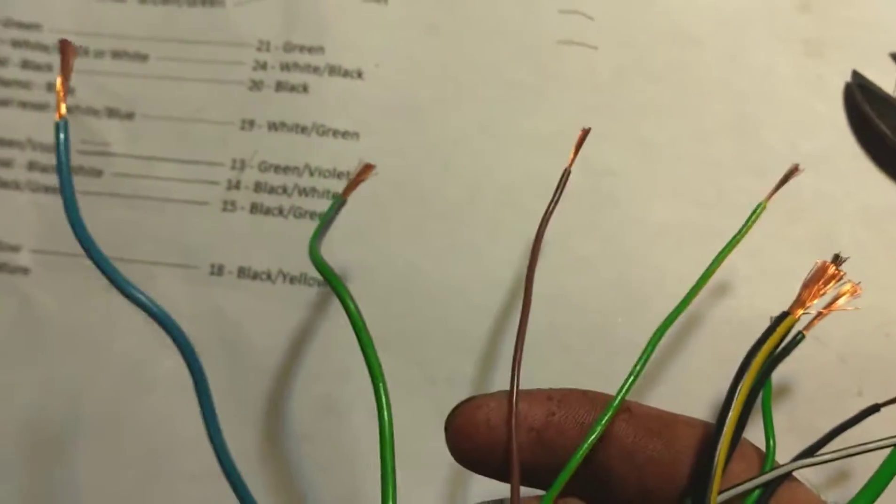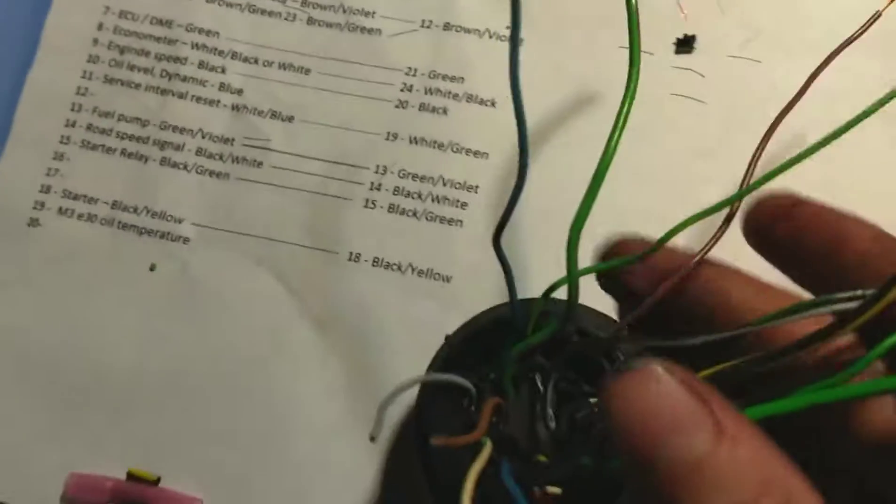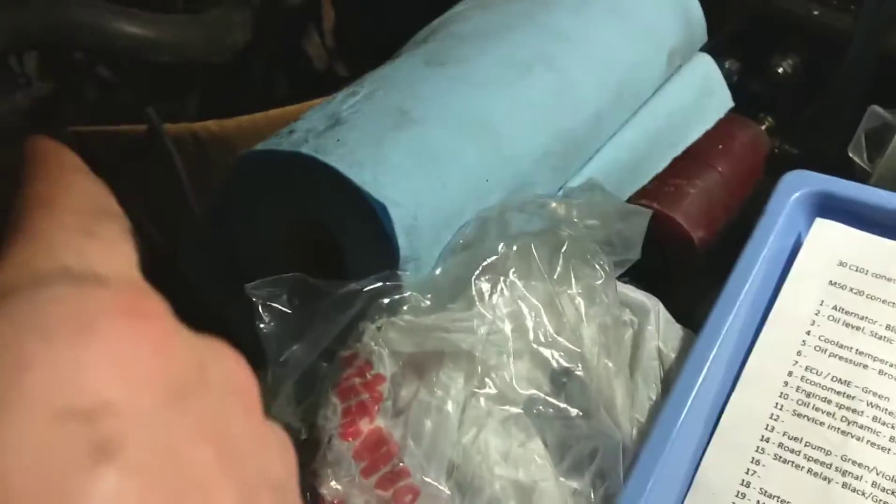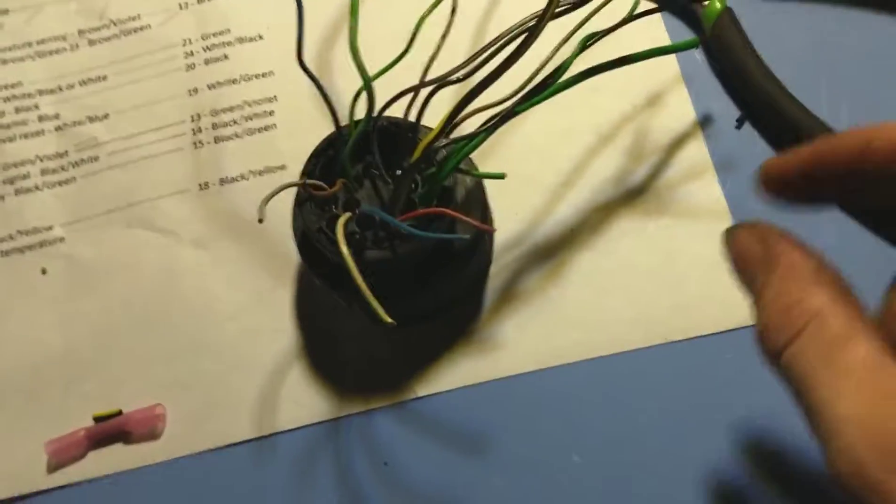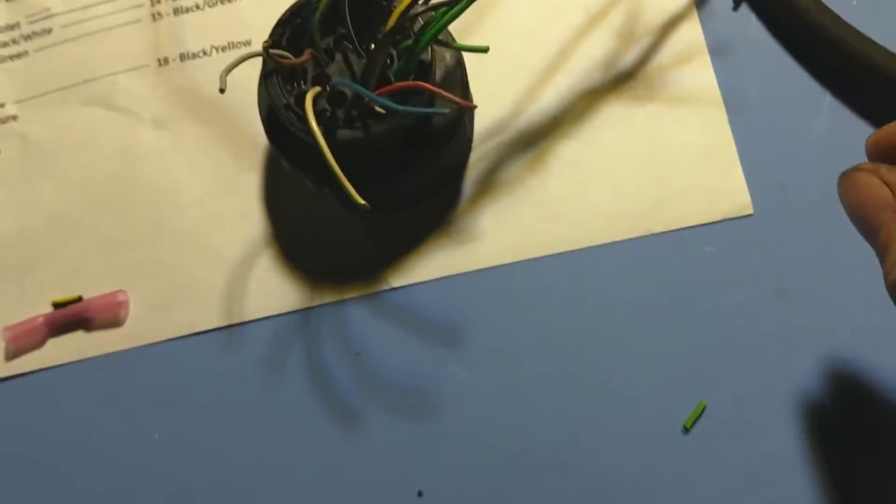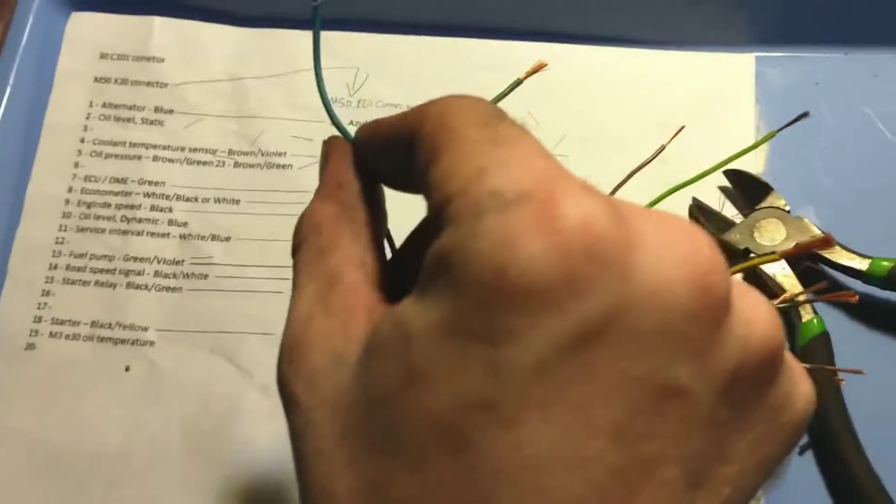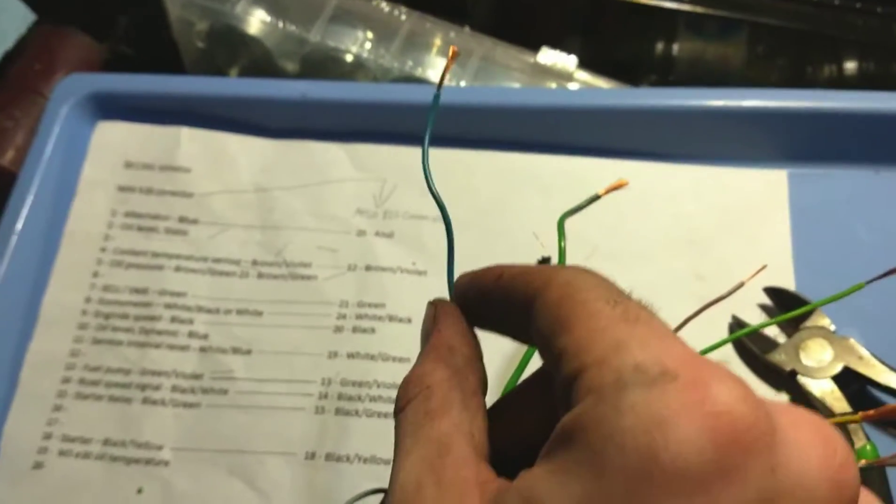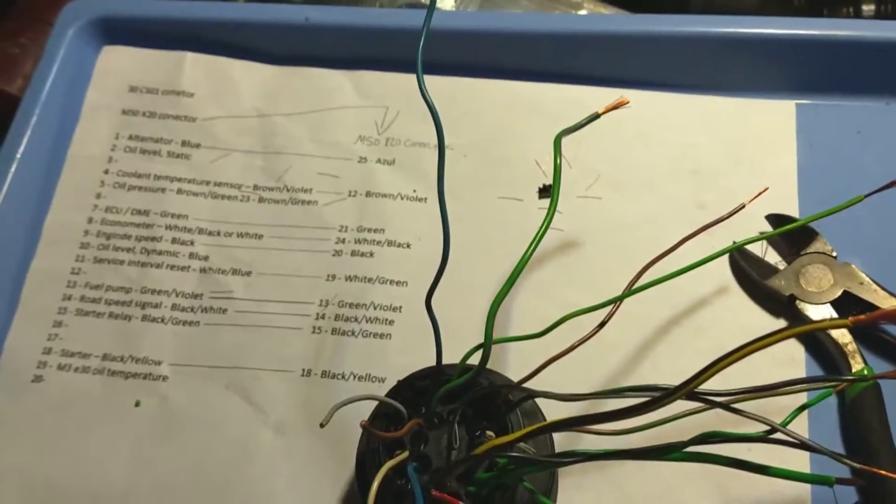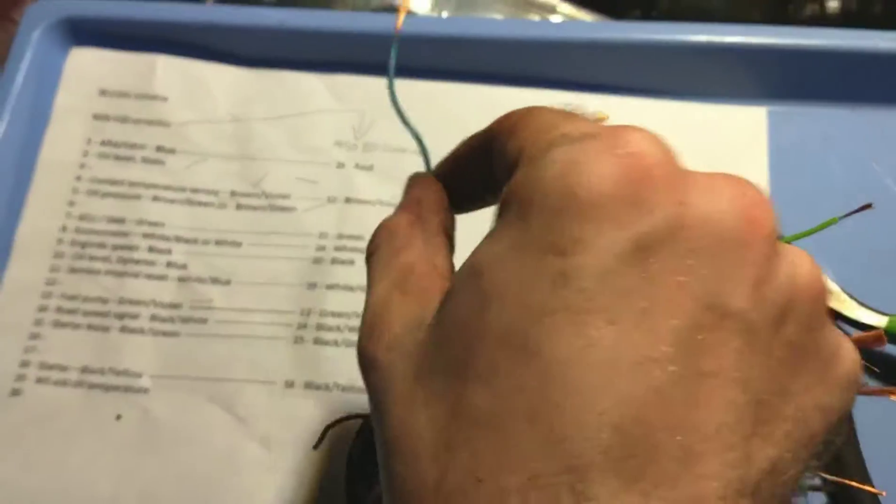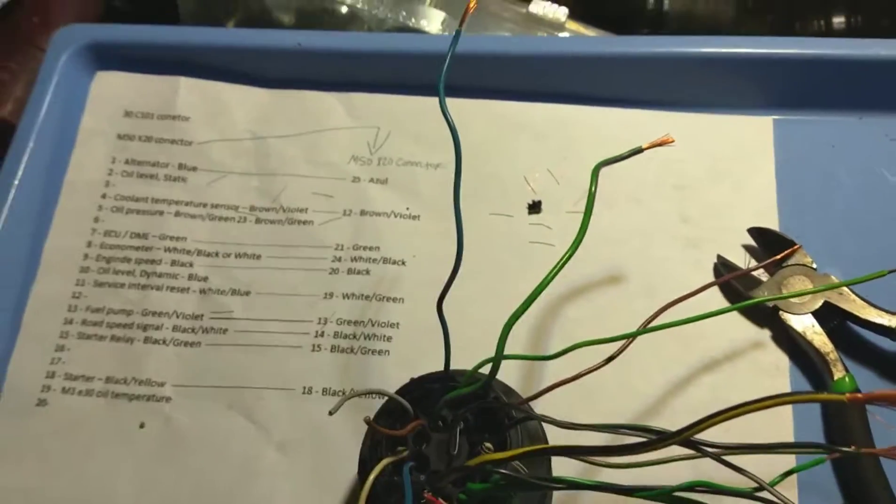Got all the wires stripped and we're ready to move on to the next step. I'm going to be taping each wire and its corresponding wire on the M50 engine harness. I'm going to put some tape on it and write a number on each one. It's going to be the same number for each corresponding wire. Like say this wire is pin 7 and it goes to pin 15 on the other harness. I'm going to write a 1 on this and a 1 on pin 15.